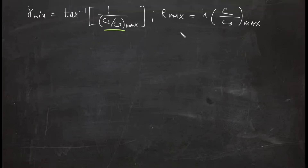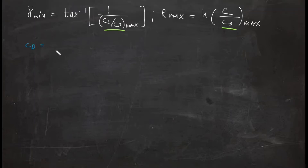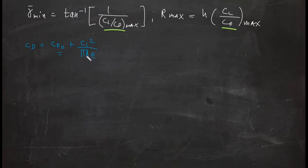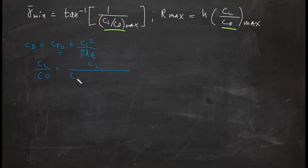How do we mathematically determine this ratio? We will apply our parabolic drag equation: CD is equal to CD sub zero plus CL squared over pi times A times e. Here CD sub zero is your parasitic drag and CL squared over pi·A·e is your drag due to lift. So CL/CD equals CL divided by the quantity CD zero plus CL squared over pi·A·e. We want to get the maximum of this ratio.